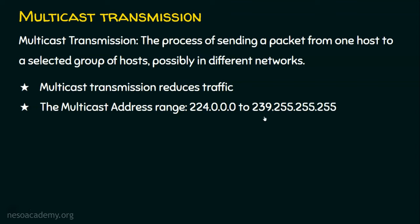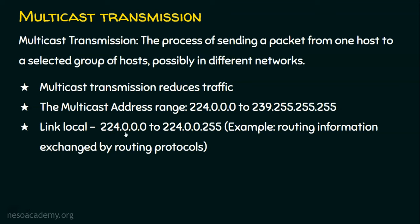An example of link local multicast addresses ranges from 224.0.0.0 to 224.0.0.255. Let's say there are two routers and these two routers have a link. These link local addresses are used for exchanging specific information — for example, the routing information exchanged by routing protocols. If two routers are going to communicate with each other, information about routing protocols will be exchanged between them. These addresses are used for that purpose, which is why they are called link local addresses. Don't worry if you are hearing the term routing protocol for the first time — we are going to deal with routing and routing protocols elaborately in this chapter.